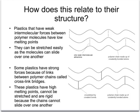Other plastics are rigid, and this is because when they form, the long polymer chains actually make strong covalent links or cross-links between one chain and its neighbours. That means that these cannot be stretched, because in order to pull one chain past another we'd have to break these strong covalent bonds, and that would take too much energy. These kinds of plastics are used for rigid applications.